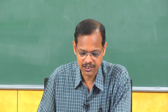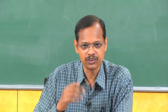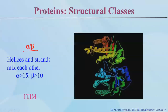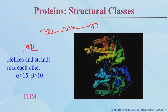The fourth type is alpha by beta proteins, which also have helices and strands - more than 15 percent helices and more than 10 percent beta strands - but they mix with each other. These numbers are not hard and fast cutoffs. For example, a TIM barrel contains 8 alpha helices and 8 beta strands alternating together.